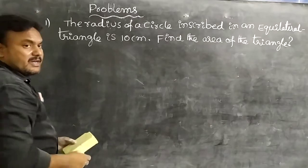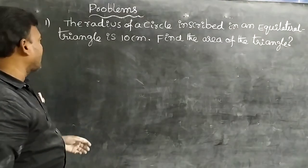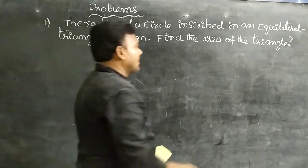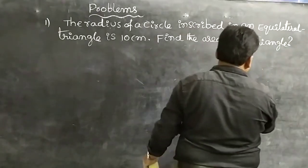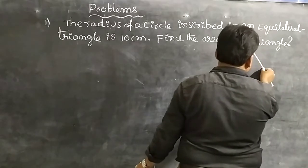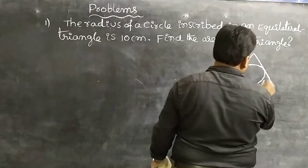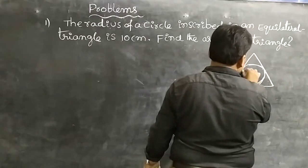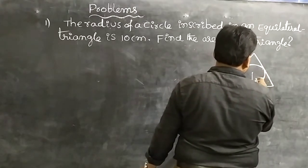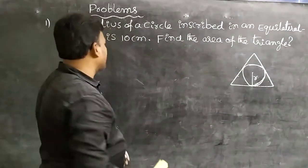Now analyze the problem carefully. The radius of the incircle in an equilateral triangle is 10 centimeters. Find the area of the triangle. This is an equilateral triangle with an incircle inscribed. The radius given is R equal to 10 centimeters.